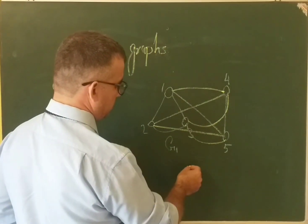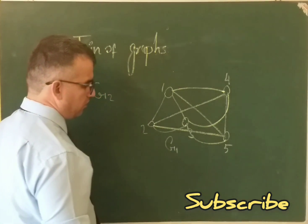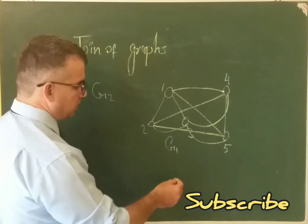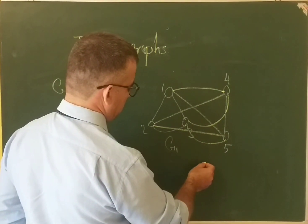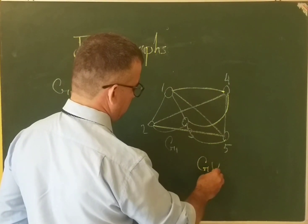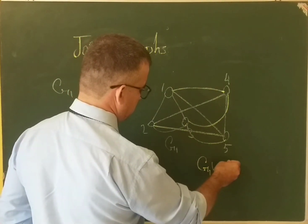Join graph G1 and G2, we denote it by G1 join G2.